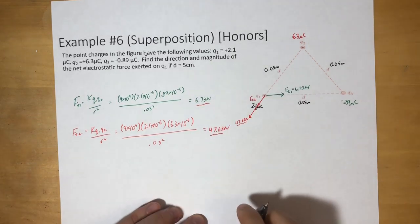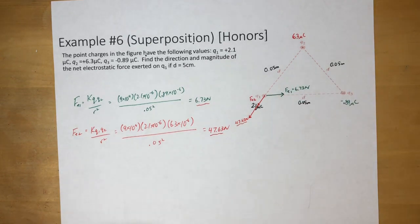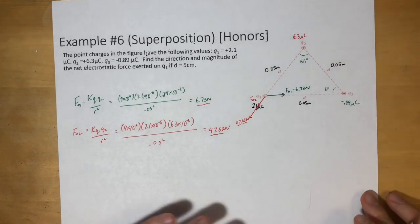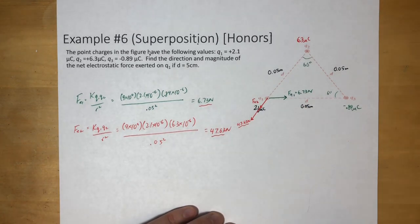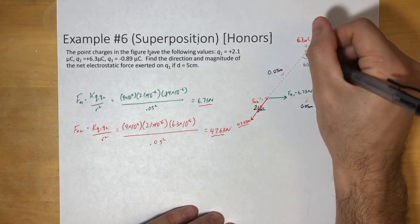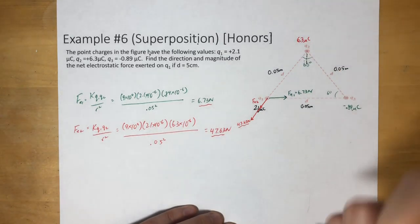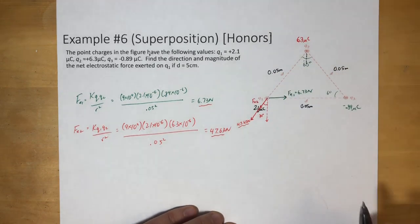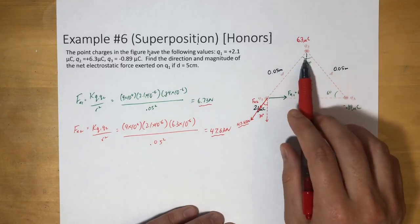One of the tricky things is figuring out what angle these forces act at. This is an equilateral triangle, so all angles are 60 degrees. The angle that F_E2 makes — I'm going to work out that this angle here is 30 degrees, because that angle is the same as the interior half-angle of 30 degrees. So F_E2 acts at 30 degrees from the horizontal.